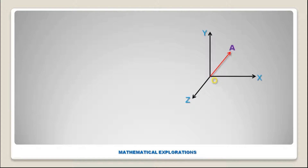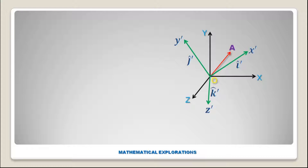Now let us rotate the XYZ coordinate system to get a new coordinate system X-prime, Y-prime, Z-prime. The vector OA will remain the same; we will just observe the effect in the new coordinate system. The basis vector along X-prime is i-cap-prime, and the basis vector along Y-prime is j-cap-prime.